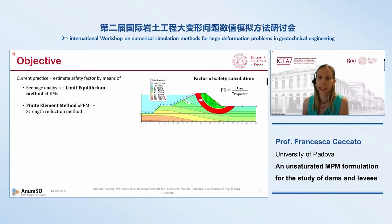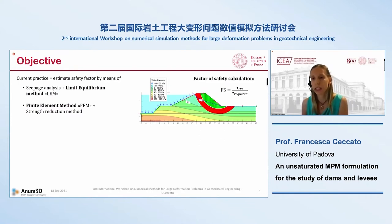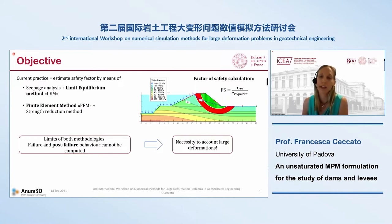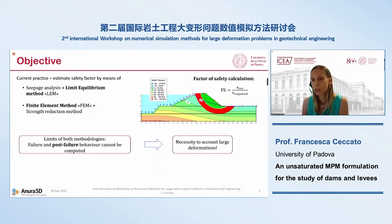Currently, the stability of levees and dams is evaluated by estimating a factor of safety, coupling a seepage analysis with a limit equilibrium method or the strength reduction method. The minimum values of the factor of safety are given by the national standard. With both the limit equilibrium method and the finite element method, the post-failure behavior cannot be computed. However, this is important information for risk assessment, because the same value of the factor of safety — say about one or slightly lower than one — in different slopes can lead to very different displacements: small displacement or a complete failure of the structure. So post-failure behavior requires the simulation of large deformation.